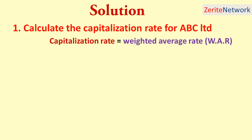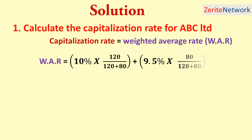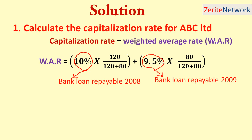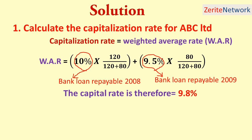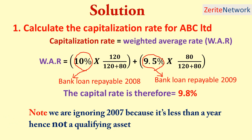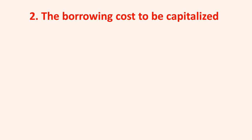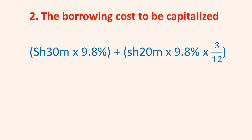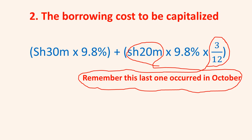For the 10% bank loan for 2008, we take 10% times 120/(120+80), plus the 9.5% bank loan which was repayable in 2009, multiplied by 80/(120+80). The capitalization rate is therefore 9.8%. We ignored the 8.9% debenture repayable in 2007 because it doesn't qualify as it only occurs for a fraction of the year. For the borrowing cost to be capitalized: 30 million times 9.8%, plus 20 million times 9.8% times 3/12 — since the last expenditure occurred in October, only three months are used — giving us 3.43 million shillings as the borrowing cost to be capitalized.